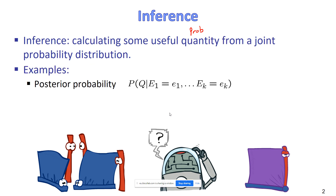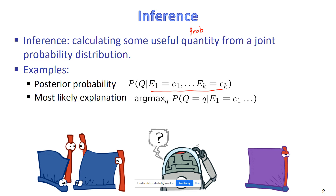Examples of useful probabilities we want to compute: the posterior probability, where we have query variables and evidence variables. We call it posterior because it's the probability of a variable given some evidence. Sometimes we also want the most likely explanation — the most likely value of the query variable given evidence.